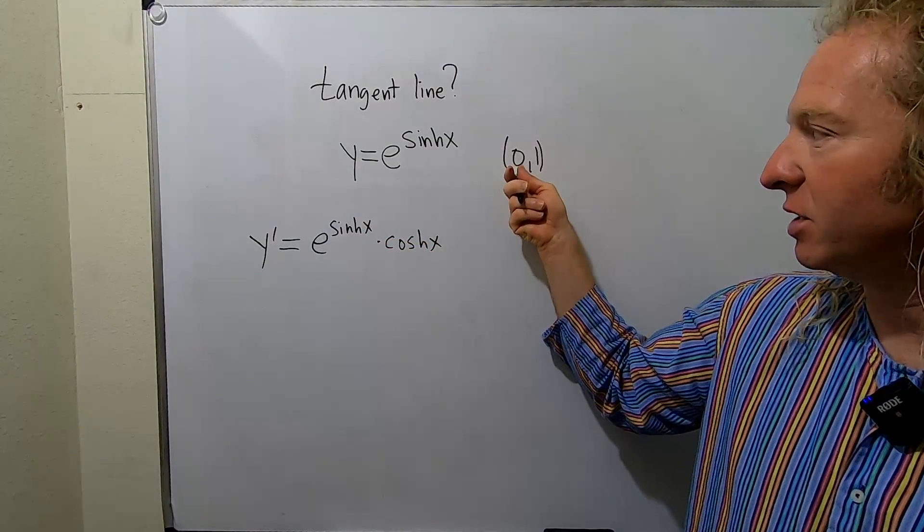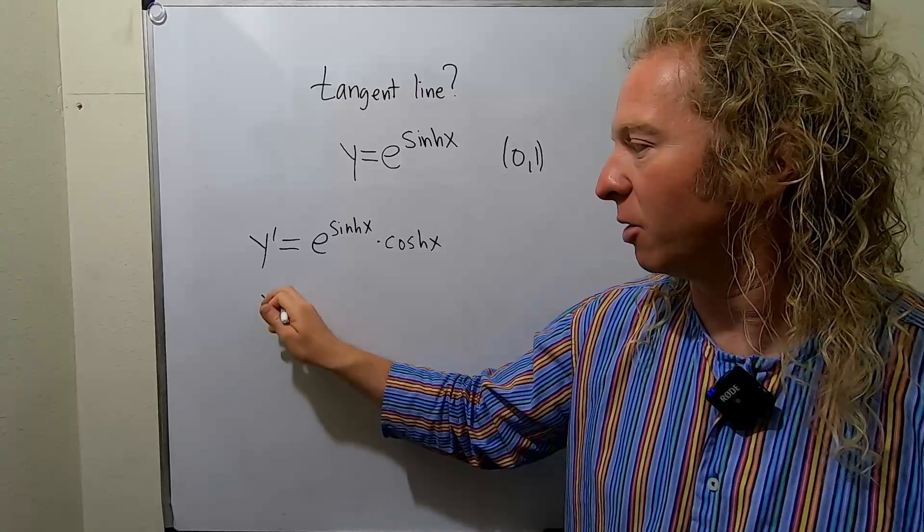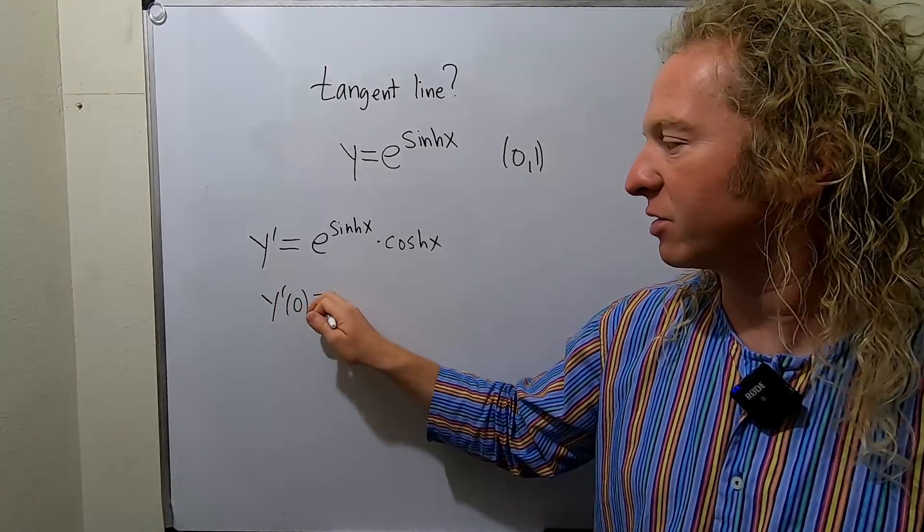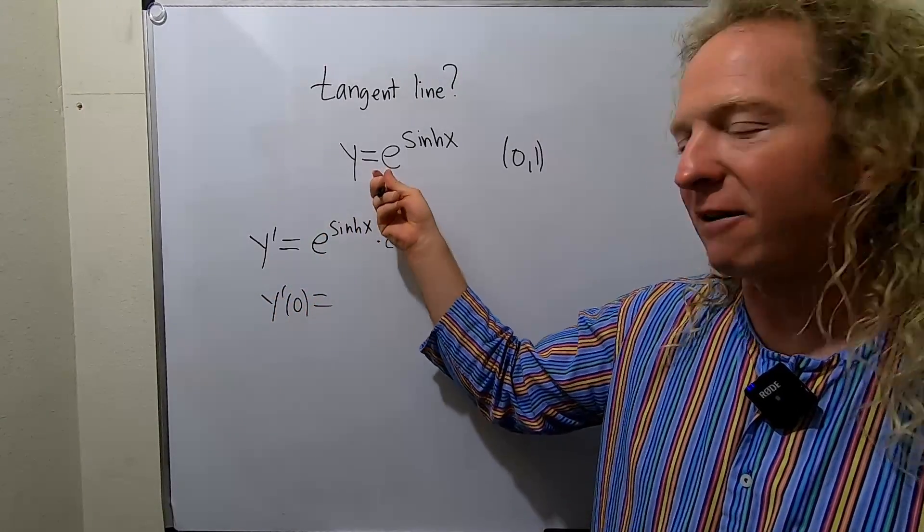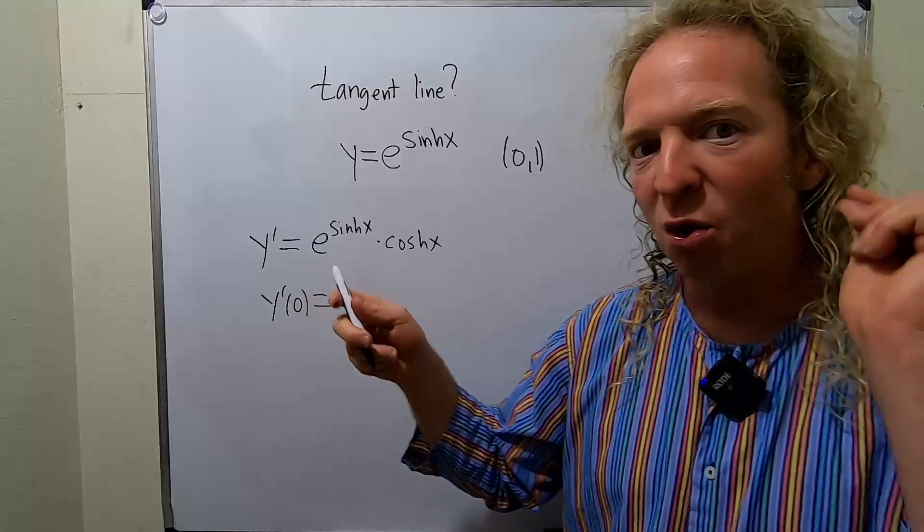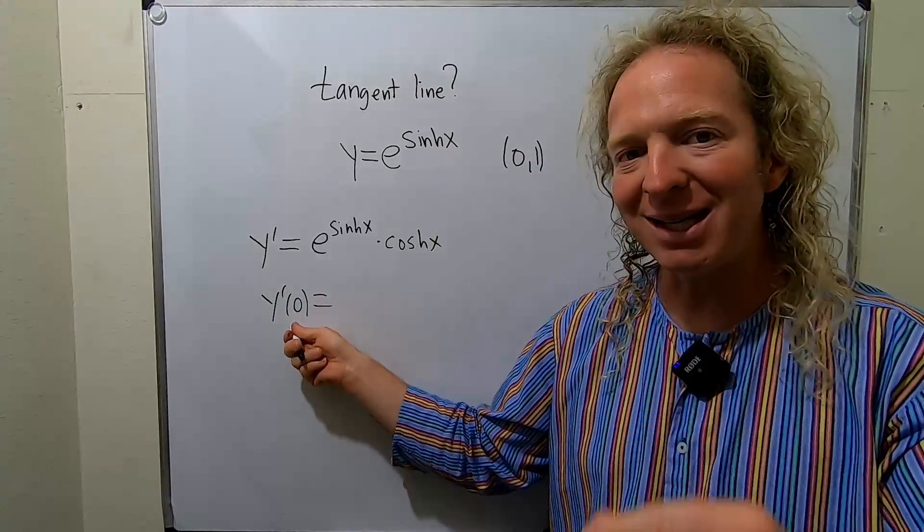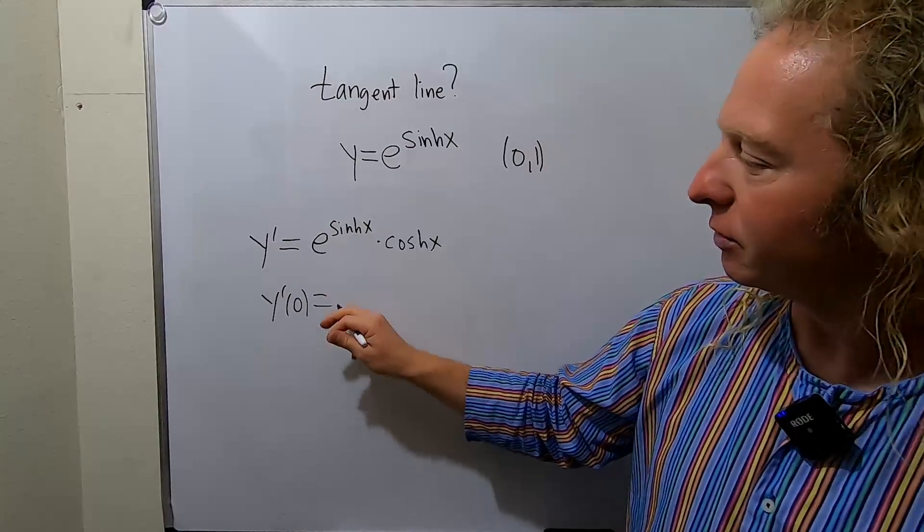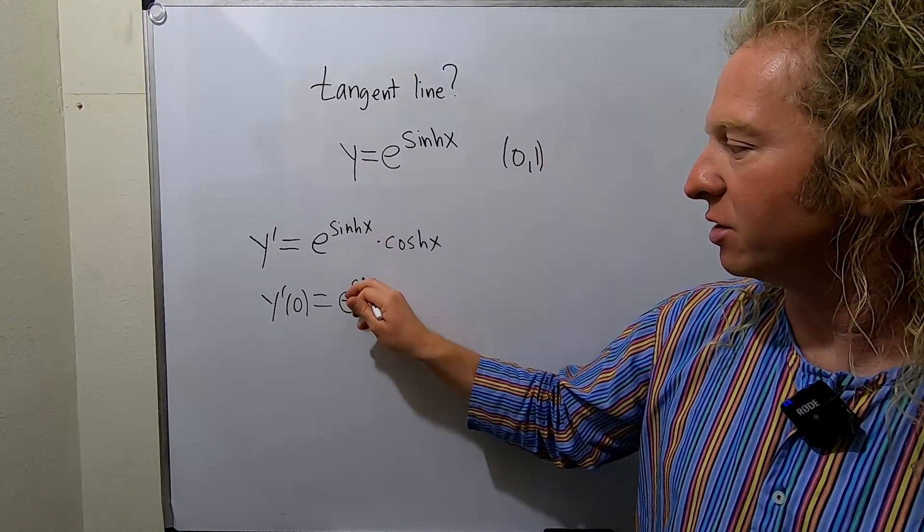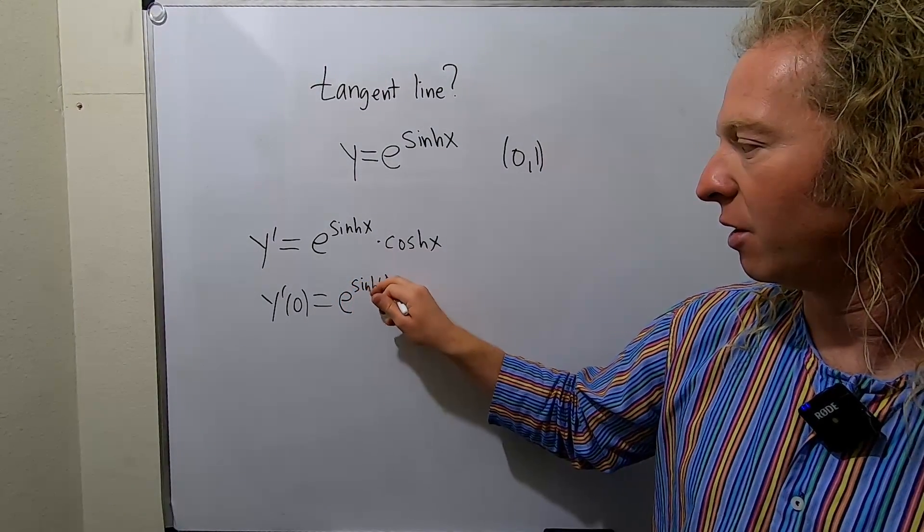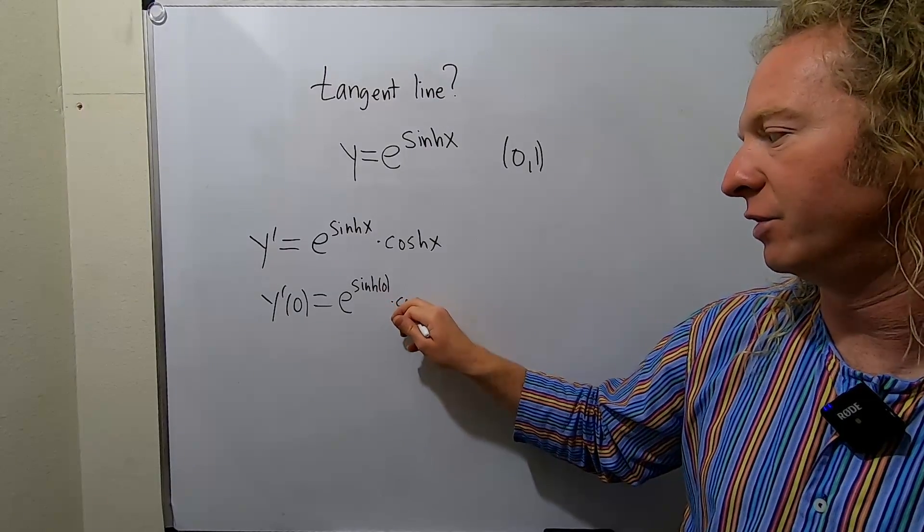Now we have to plug in x = 0 to find our slope. This gives us the slope at any point on the graph of this function. We want the slope at x = 0. I'm using this notation here to indicate that we're plugging in 0. So this is e^(sinh 0) times cosh 0.